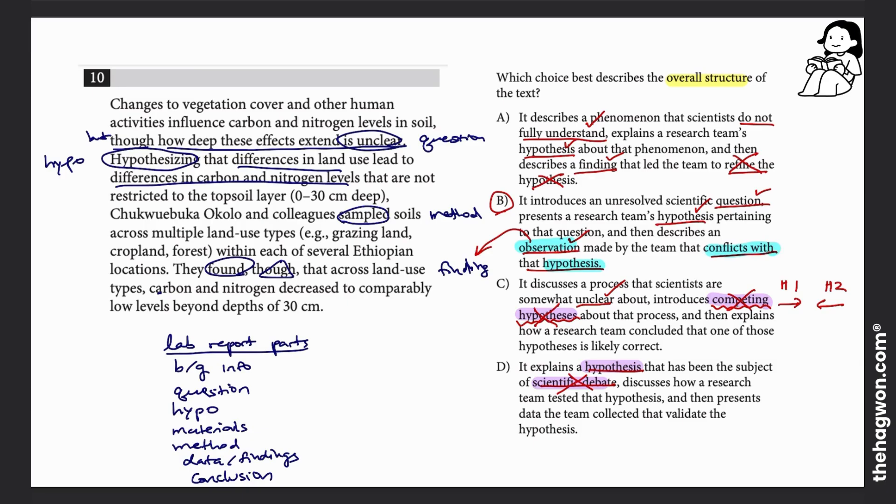If we look at the observation and the hypothesis, the hypothesis was that different land would mean different carbon and nitrogen levels, but the actual finding says across land types—so it means across different kinds of lands—carbon and nitrogen decreased to low levels. So it means in all different types, carbon and nitrogen decreased, which goes against the hypothesis, which thought that in different types of lands you would have different kinds of levels. So for that reason, B is absolutely correct and the correct answer to this question.